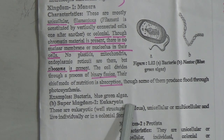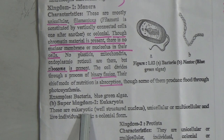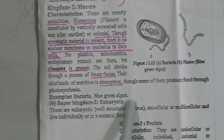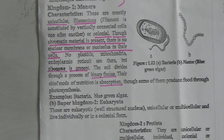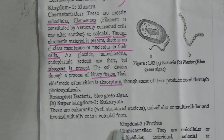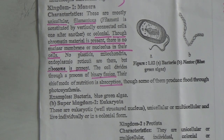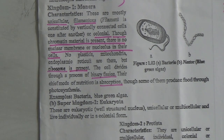Super Kingdom 2 is Eukaryota. These are eukaryotic organisms, meaning their nucleus is well structured. They can be unicellular or multicellular, living individually or in colonial form. Kingdom 2 is Protista.